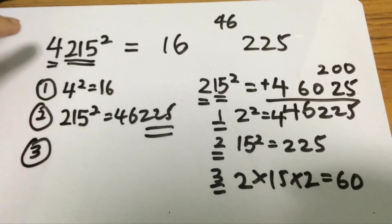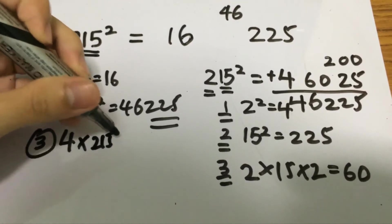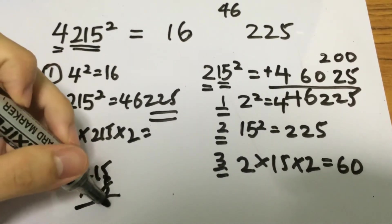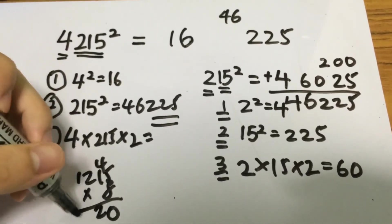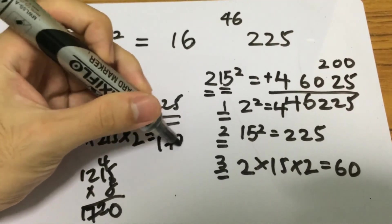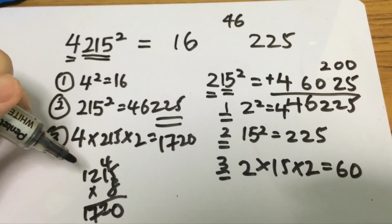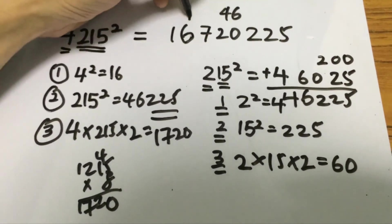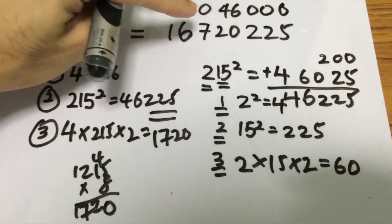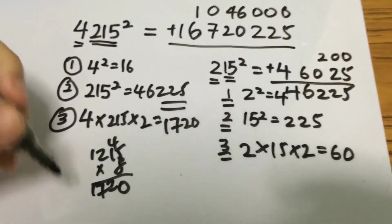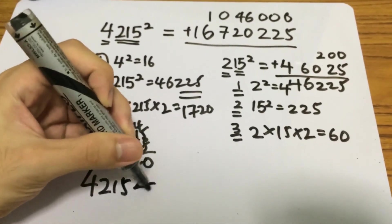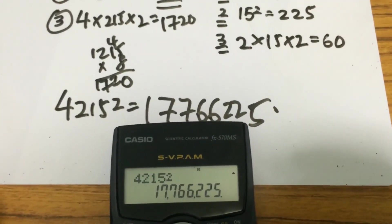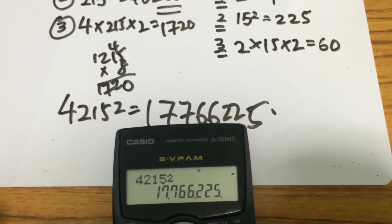Last but not least, we multiply the first digit 4 by 215, times 2, which gives 1720. We include only the last three digits of 1720 in this form and carry the rest. After adding the zeros and summing everything up, 4215 squared equals 17,766,225. Using the calculator, we confirm: 4215 squared is 17,766,225.